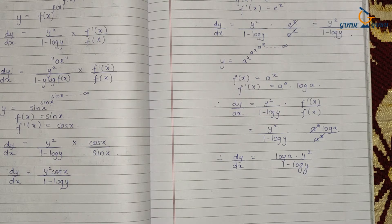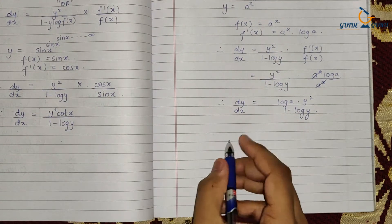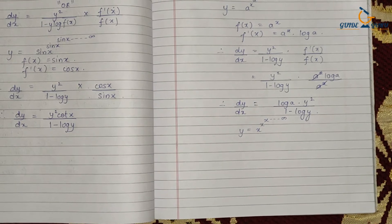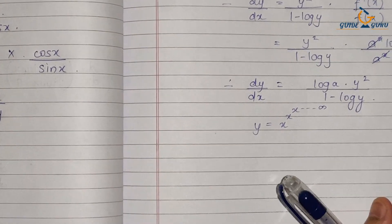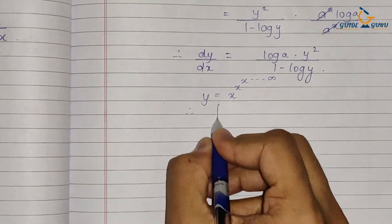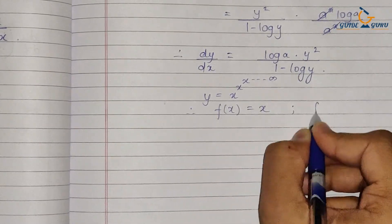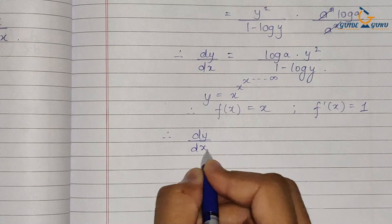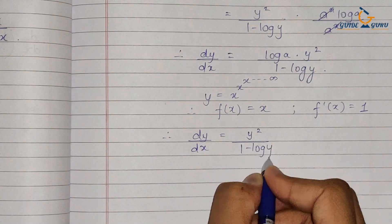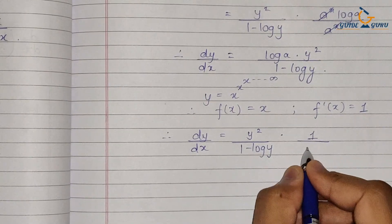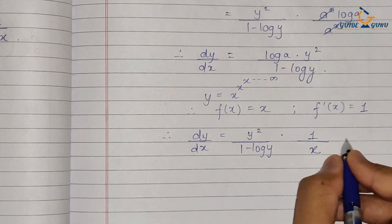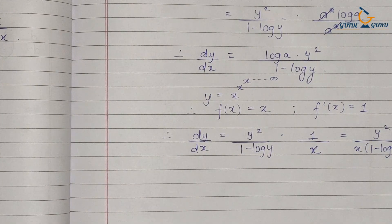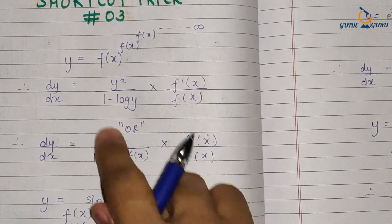One more example: y = x^x^x going on till infinity. Here the function is simply x, and its derivative with respect to x is 1. So dy/dx = y² upon (1 − log y) into 1/x, which gives dy/dx = y² / (x·(1 − log y)).